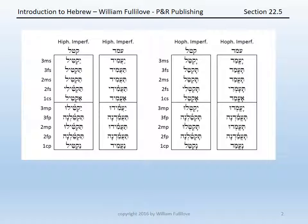The exact same pattern follows in the imperfect. It's no longer the he of the Hiphil or Hophal perfect that precedes the first root letter, but it is the prefix of the paradigm itself. The exact same situation occurs in the Hiphil imperfect or the Hophal imperfect of katal — there would be a schwa under the kof, the first root letter. When the first root letter is a guttural, as in amad, that will be a compound schwa.